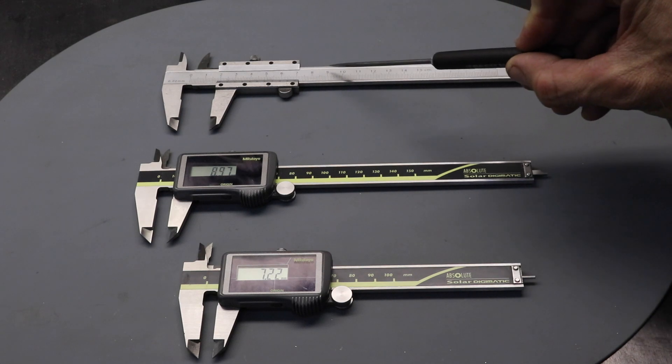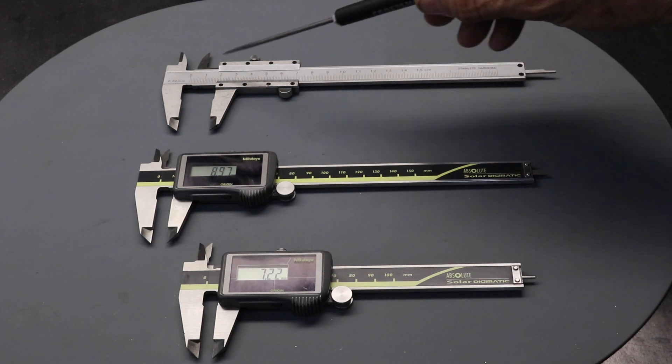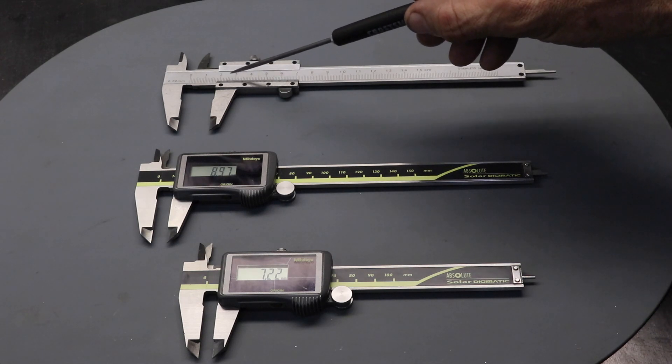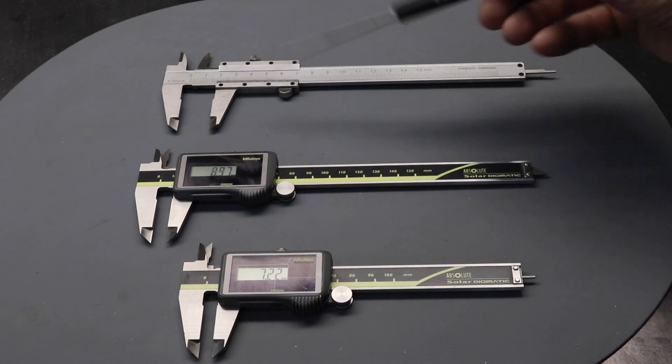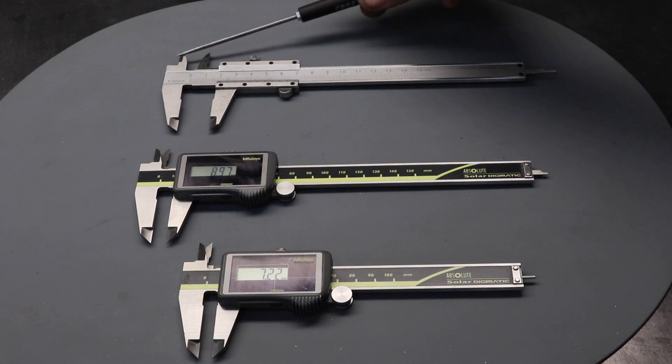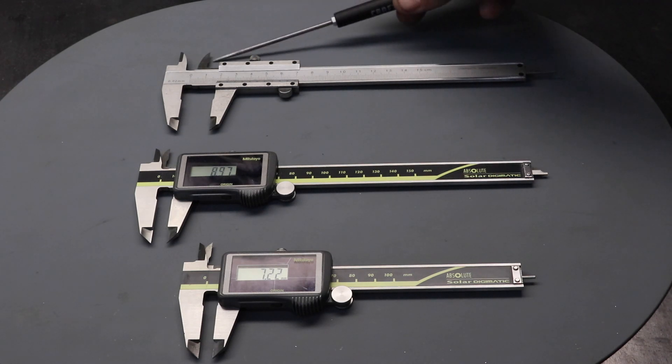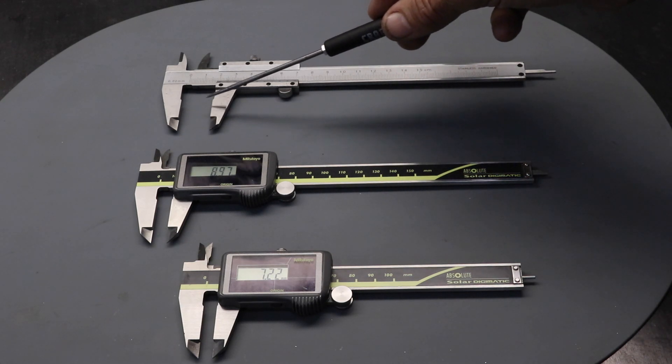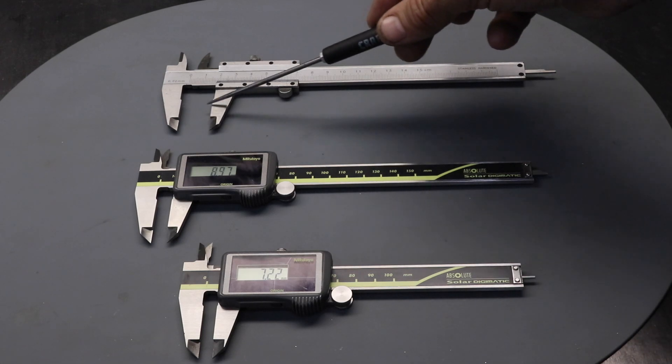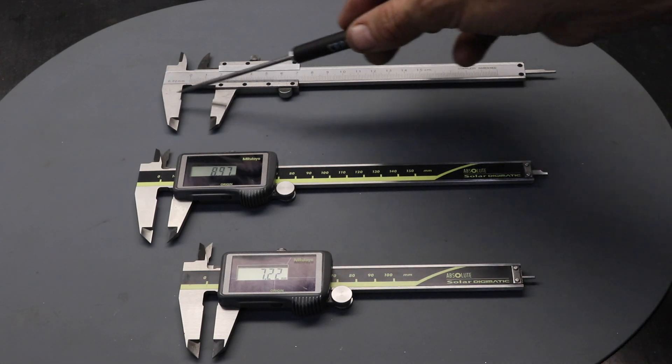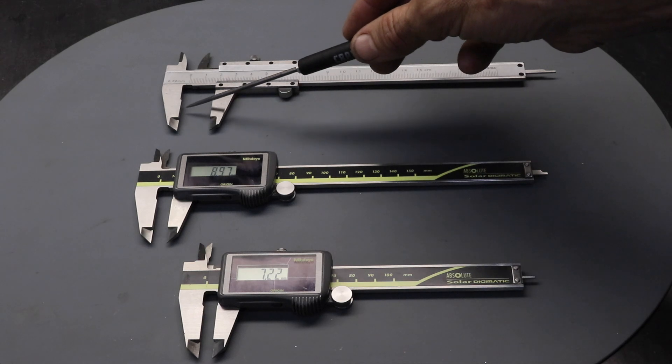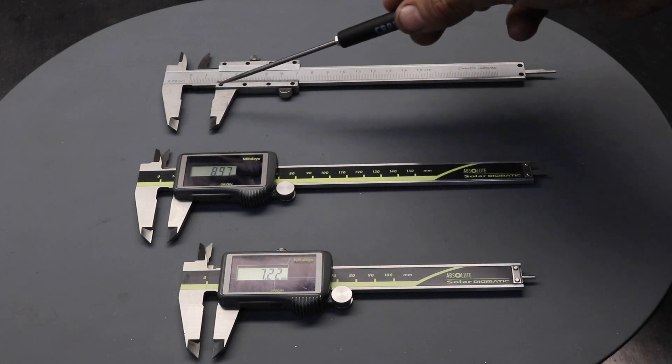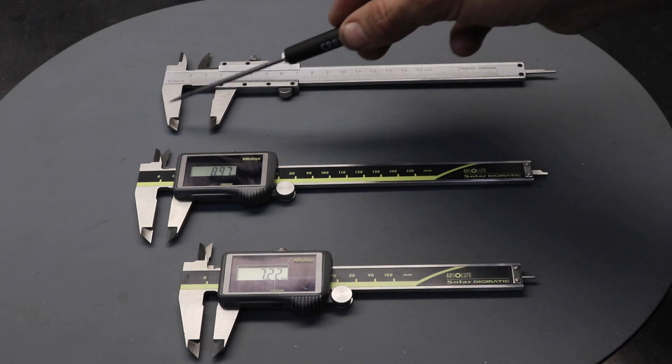The top one is a vernier caliper, and it has a scale allowing you to read down to 0.1 of a millimeter. You can use it to measure internal bore using these jaws, and you can measure the length or diameter of something like a bolt using these jaws. The jaws have a flat here and also a sharp edge, so depending on what you're measuring you can use different parts.